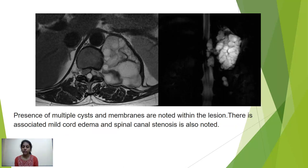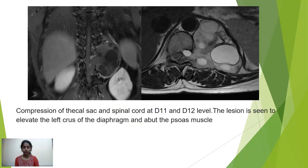This MRI shows presence of multiple cysts and membranes noted within the lesion. There is associated cord edema and spinal canal stenosis. Compression of the thecal sac and spinal cord at D11 and D12 level is seen. The lesion also appeared to elevate the left crus of the diaphragm and abut the psoas.